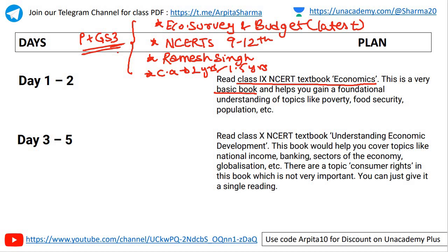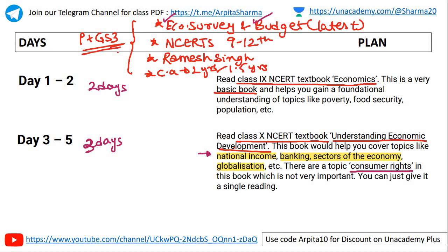Day three to day five: read the class 10th NCRT textbook, Understanding Economic Development. This book covers important topics like national income, globalization, banking, and sectors of the economy — primary, secondary, and tertiary. National income deserves extra attention as it is also part of the Economic Survey and Budget. Note that the consumer rights chapter in this NCRT is not important and can be ignored.